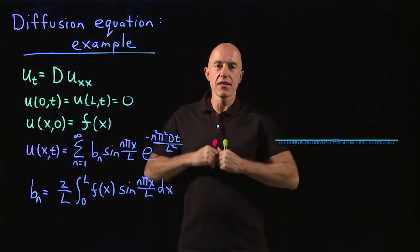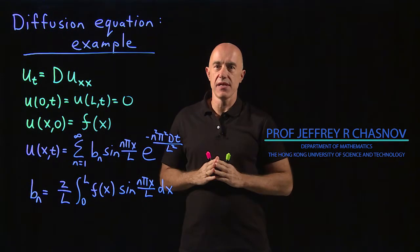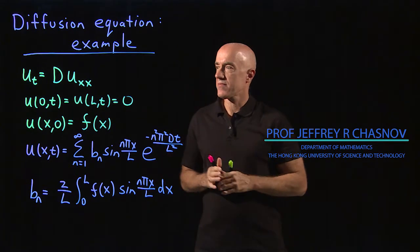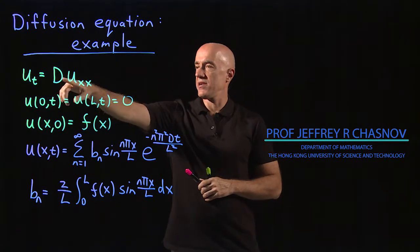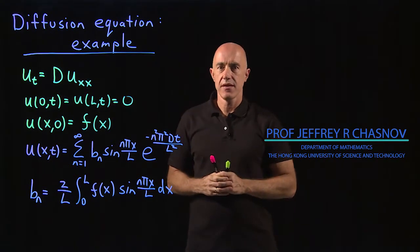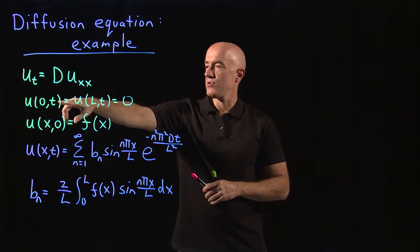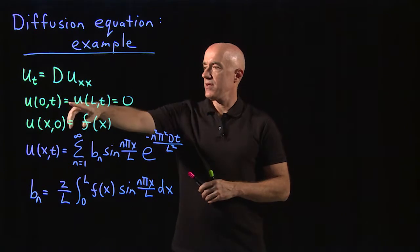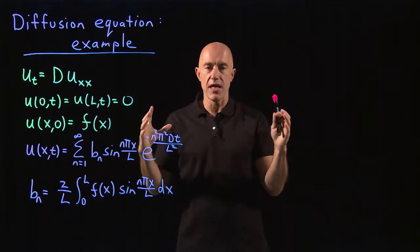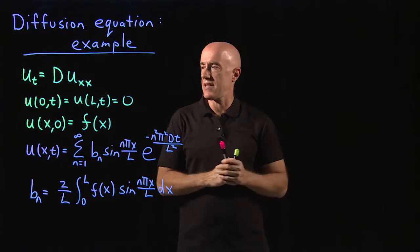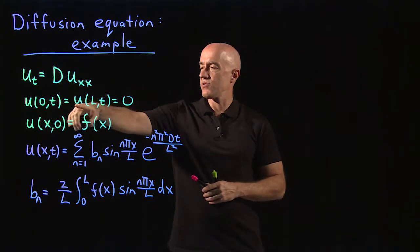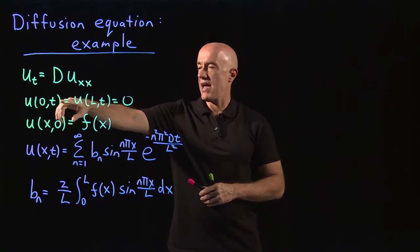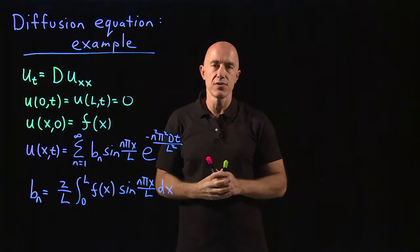So we've done a lot of work to solve the diffusion equation. We were solving u_t equals Du_xx. We had this homogeneous Dirichlet boundary condition so that the pipe of length L has these two large reservoirs at the end so that the concentration of the dye at the ends of the pipe goes to zero.